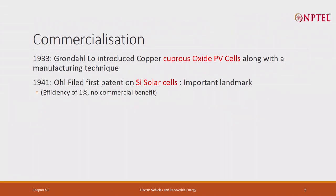Much later, in 1933, Gondahl Lowe introduced a copper cuprous oxide photovoltaic cell along with a manufacturing technique. In 1941, the first patent on a silicon solar cell was filed, with a landmark efficiency of one percent — meaning one percent of the light falling onto it was converted into electric power, with 99 percent remaining as heat, reflected light, and so on.